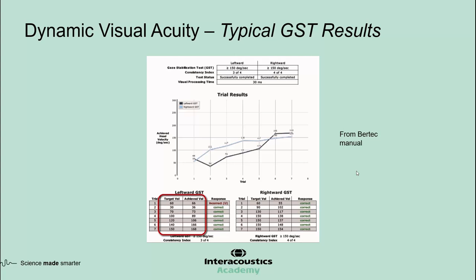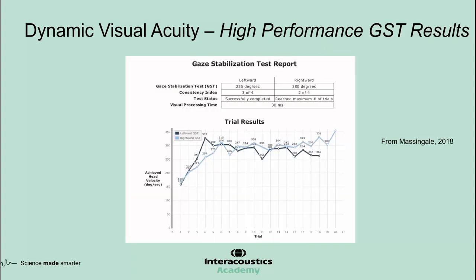There are two different head velocities shown: the target head velocity, which is set by the computer and represents the desired speed, and the achieved head velocity, which is the actual velocity the patient achieves during each trial. By relying on the achieved head velocity for analysis, the results are likely to be more accurate. The high-performance GST allows head velocities up to 300 degrees per second and is appropriate for athletes and high-performing individuals.